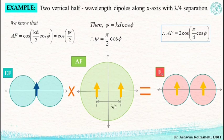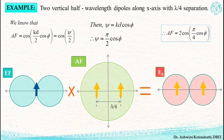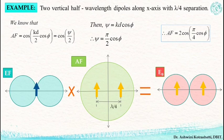You see that pattern multiplication is a very important and very simple technique to arrive at the final radiation pattern due to an array configuration. It helps to draw and visualize the radiation pattern of the array, and it is a very simple technique where you just need to take a product of two patterns. Without laborious mathematical computations, you can arrive at the final radiation pattern.